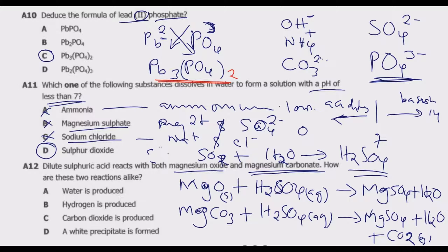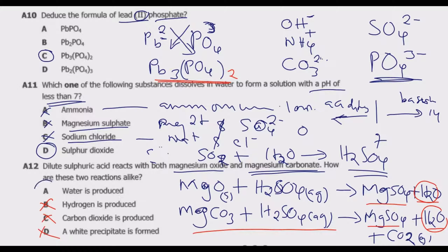What is common to both reactions is that water and magnesium sulfate are both produced. Looking at the options: A — water is produced — true, water appears in both equations, so A is correct. B — hydrogen is produced — no, there is no hydrogen. C — carbon dioxide is produced — it's only produced in one equation. D — a white precipitate is formed — magnesium sulfate is a soluble salt in water, so it does not form a precipitate. Therefore A is the correct answer.